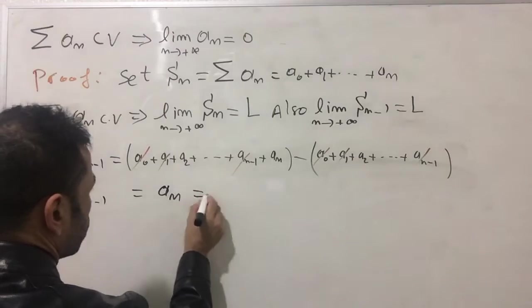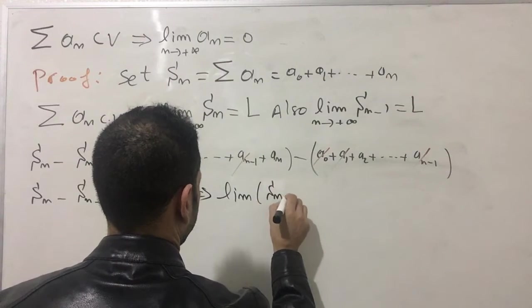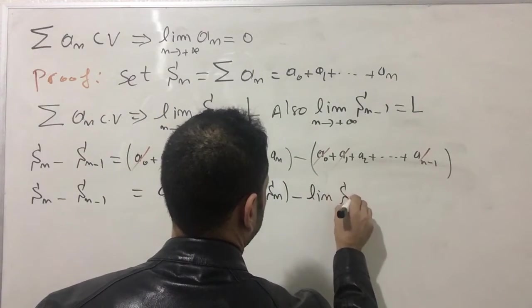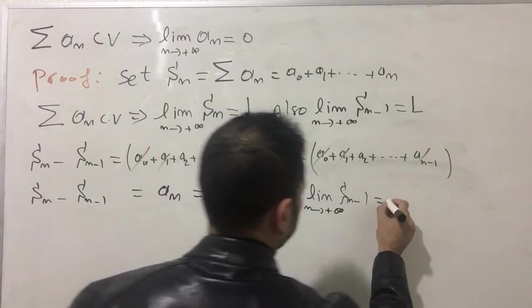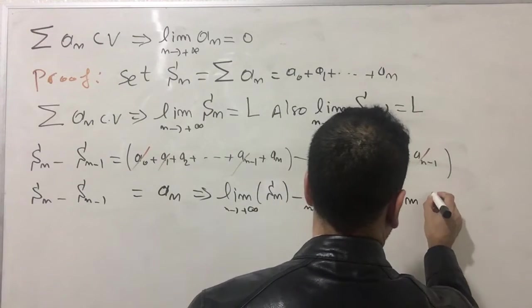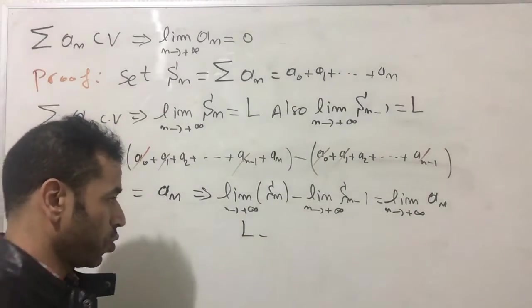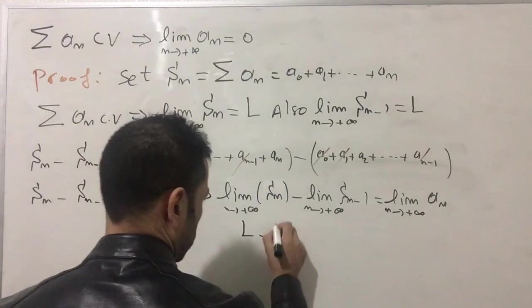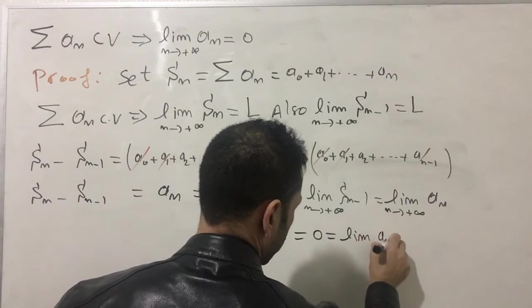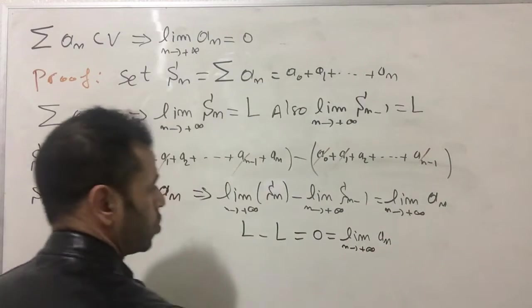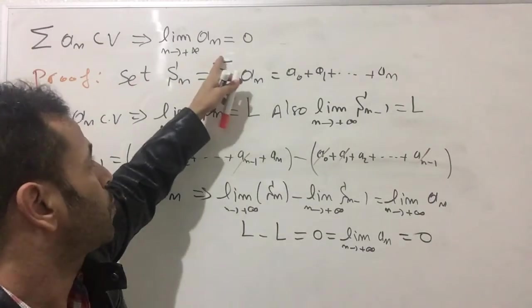Now I'm going to apply the limits on both sides. The limit of S_n minus S_{n-1} as n goes to infinity equals the limit of a_n as n goes to infinity. The limit of S_n equals L, and also the limit of S_{n-1} equals L as well, which gives L minus L equals 0. Therefore, the limit of a_n as n goes to infinity equals 0. We have proved that a convergent series implies the limit of a_n equals 0.